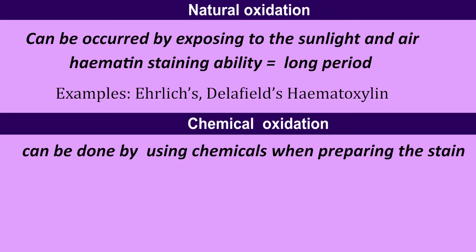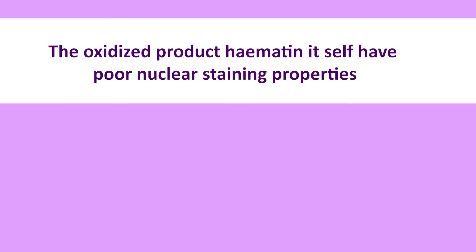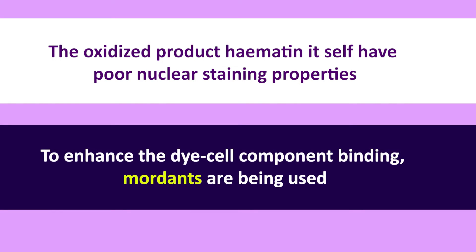Chemical oxidation can be done by using chemicals when preparing the stain, but this product retains its staining ability for a shorter period. However, the oxidized product hematein itself has poor staining properties, so mordants are used to enhance the dye-cell component binding.